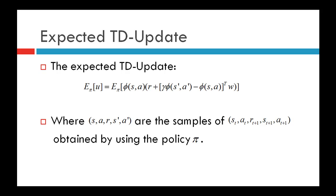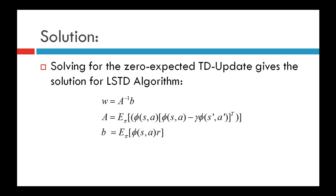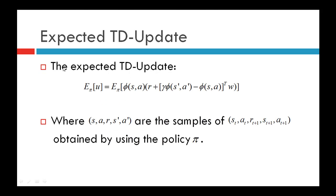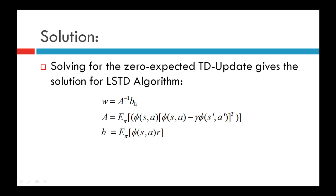Equating the expected TD update to zero gives the solution for the LSTD algorithm, which is a fixed-point solution. Solving for zero expected TD update gives W = A⁻¹B, where A is a matrix given as the expected value of phi(S, A) times [phi(S, A) minus gamma times phi(S', A')] transpose, with expectation taken over policy pi, and B is a vector given as the expected value of phi(S, A) times R, also with expectation over policy pi.